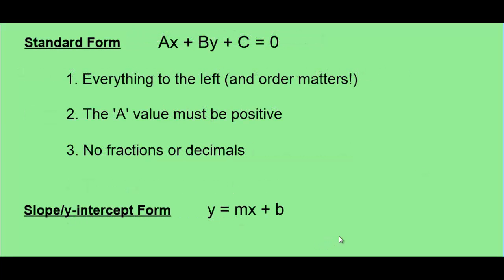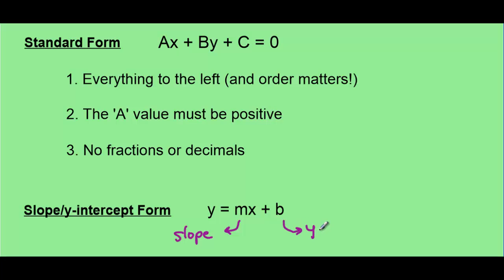The second way we know how to write an equation of a line is in slope y-intercept form, or y equals mx plus b form. In y equals mx plus b form, we can easily see two things: the first is the slope, which is represented by the m value, and the other is the y-intercept, which is represented by the b value.